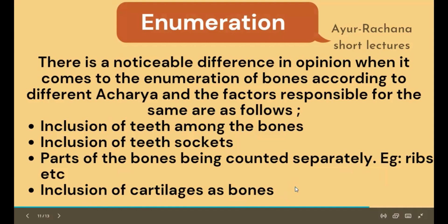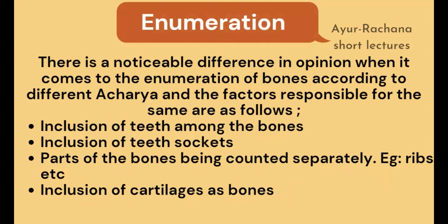So these are the reasons why there is a difference in opinion regarding the number of bones — different according to different Acharyas and also compared with modern science. During that era, dissection was carried out according to the Mraddha Samshodhana Vidhi, and structures were observed based on their consistency.